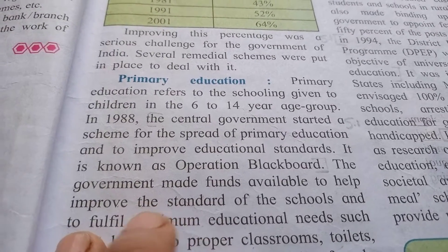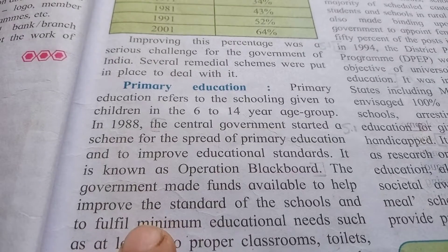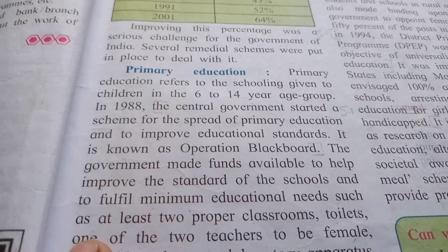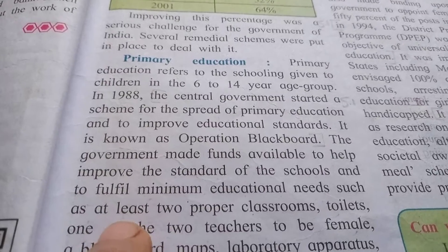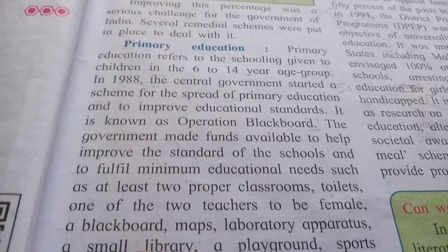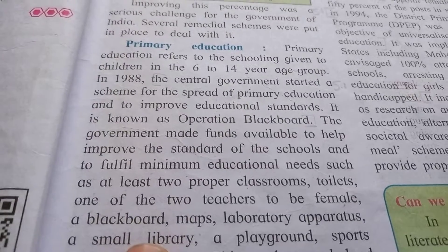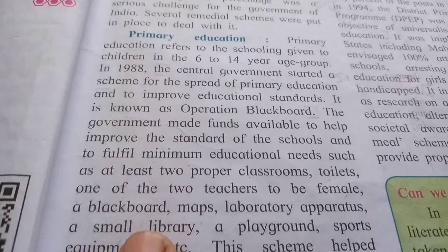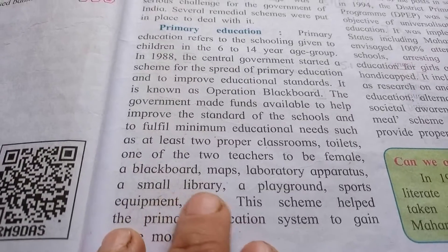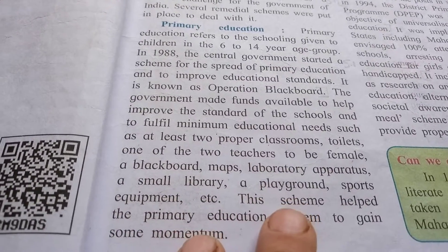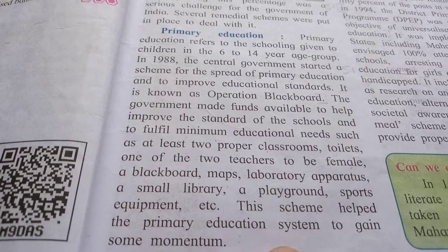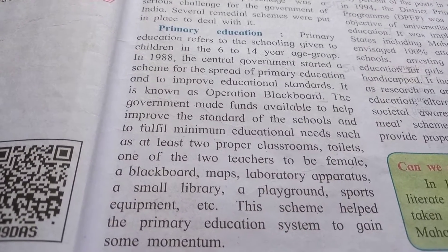The government made funds available to help improve the standards of schools and fulfil minimum educational needs, such as at least two proper classrooms, toilets, one of the two teachers to be female, a blackboard, maps, laboratory apparatus, a small library, playground, sports equipment, etc. This scheme helped the primary education system to gain some momentum.